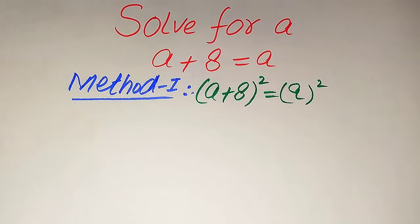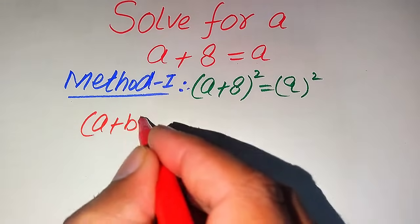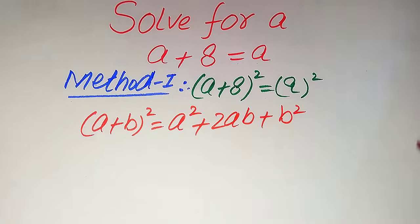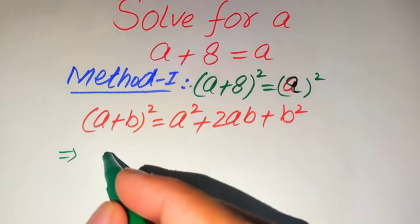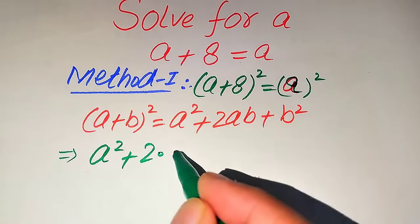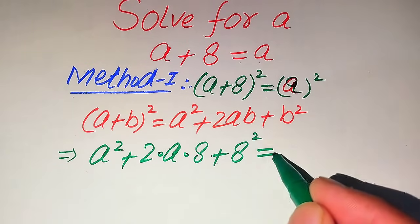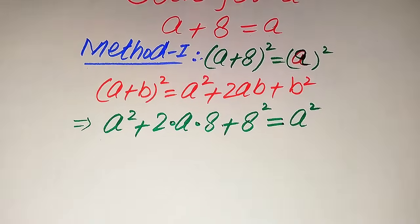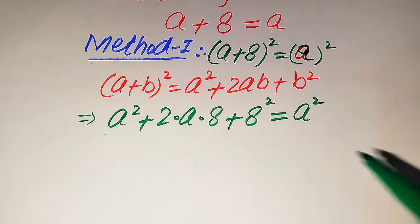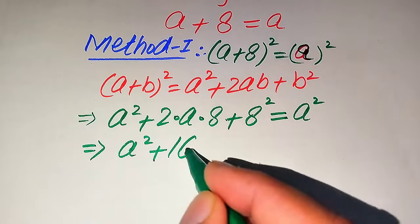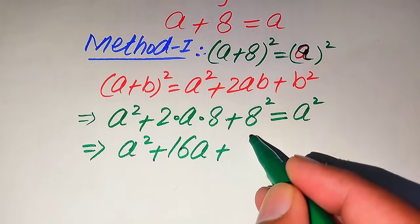On the left hand side we use the algebraic formula: (a + b)² = a² + 2ab + b². Applying this formula to the left hand side, we get a² + 2·a·8 + 8², which equals a². Since b = 8, we have a² + 16a + 64 equals a².